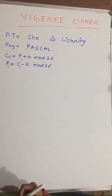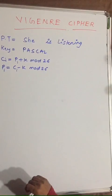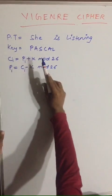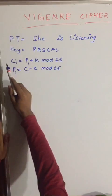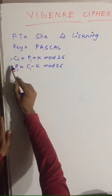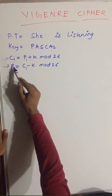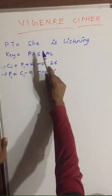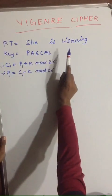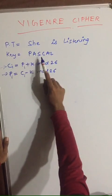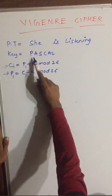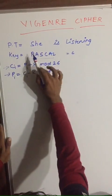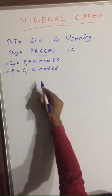Hello friends, in this lecture you are going to learn about the Vigenère cipher. You will be given a plaintext and a key, and there are two rules: one for converting plaintext to ciphertext, and one for converting ciphertext back to plaintext. The plaintext is 'C is listening' and the key is 'Pascal', so the key length is 6.